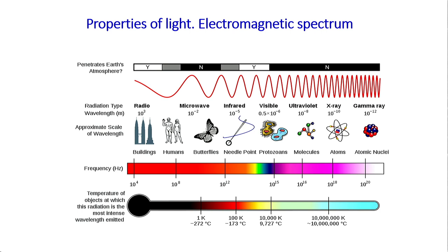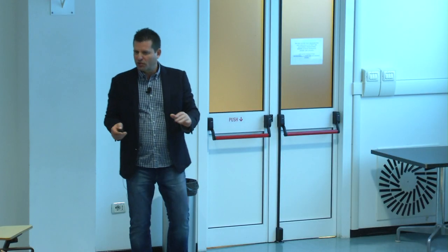Let's start with a very, very simple figure about the electromagnetic spectrum. We know that the human eye is only able to capture a very, very small region of this spectrum — here in the visible, from 400 to 700 nanometers. This is different from other animals, which have different vision.